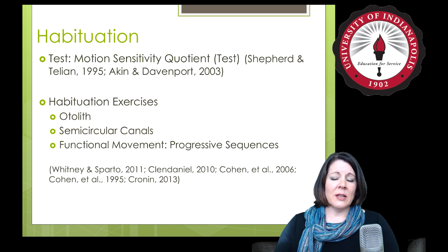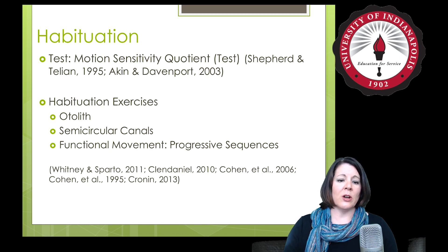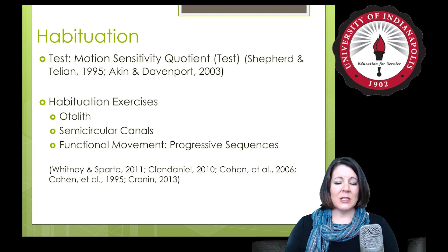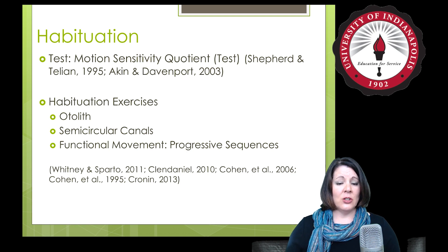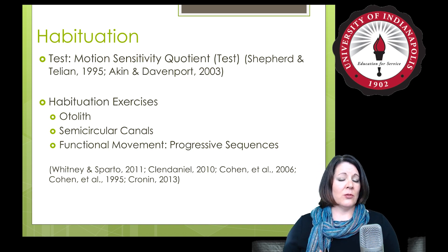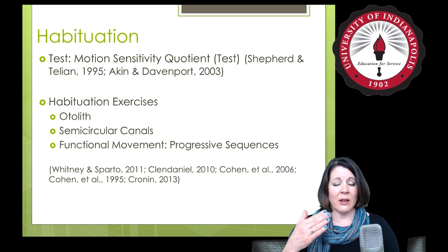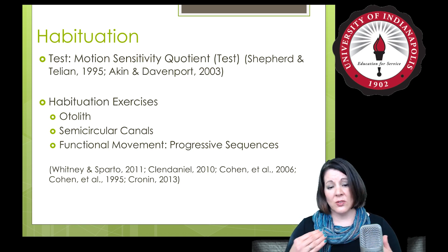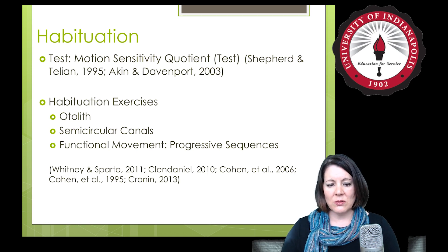Habituation uses something called the motion sensitivity quotient, or motion sensitivity score, which is available free online. You take the person through about ten different motions — the Dix-Hallpike is actually one at the end — and have them score how dizzy each movement makes them and how long it takes to return to baseline. Early on, many people won't get all the way through the test because they become too dizzy after three to five motions. That's okay — you stop, you've learned what you need, and you have a few motions already tested that you can use with them.